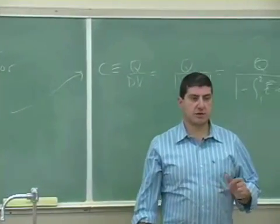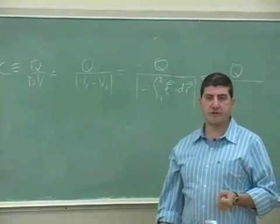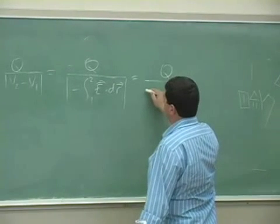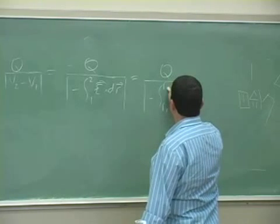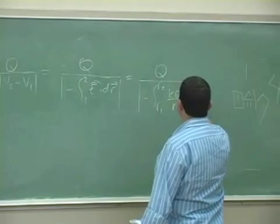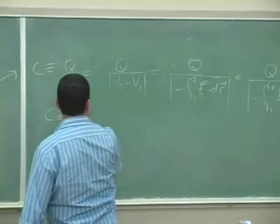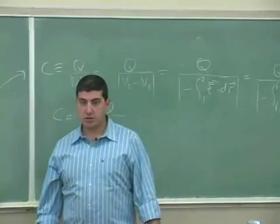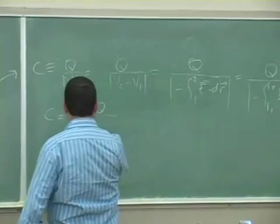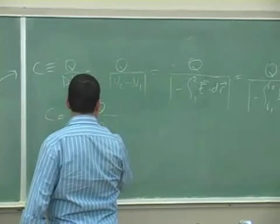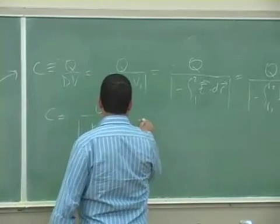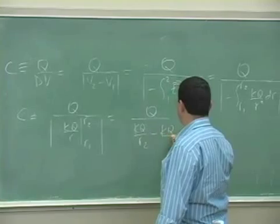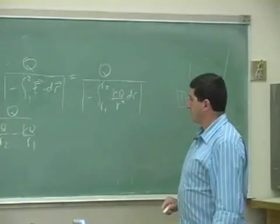We can use the electric field from Gauss's law. The electric field derived for a sphere is KQ over R squared. So we integrate that from R1 to R2: KQ over R squared dr. The integral of that is negative KQ over R, and the negatives cancel, giving us the absolute value of KQ over R from R1 to R2, which is the absolute value of KQ over R2 minus KQ over R1.